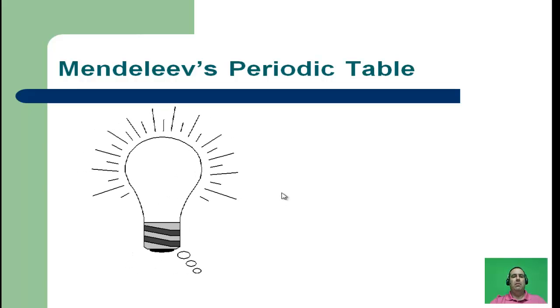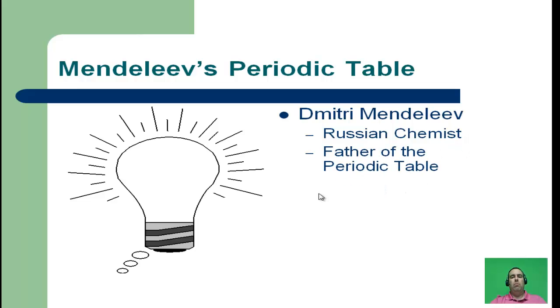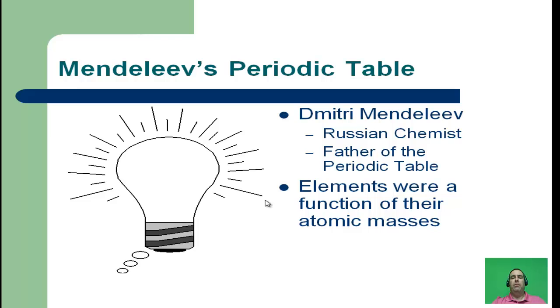The first individual to give us something that really resembled our periodic table was Dmitry Mendeleev. Dmitry Mendeleev was a Russian chemist, and he's given the title of the father of the periodic table. The reason why he's given that title is because he gave us something that resembled what we currently have today. What he said was the elements were a function of their atomic masses.